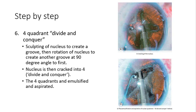Step six is the divide and conquer — or four-quadrant divide and conquer. The nucleus is sculpted to create a groove, then rotated to create another groove at 90 degrees to the first, and the nucleus is cracked into four components. These are then emulsified — destroyed — and aspirated up into the instrument and removed from the eye.